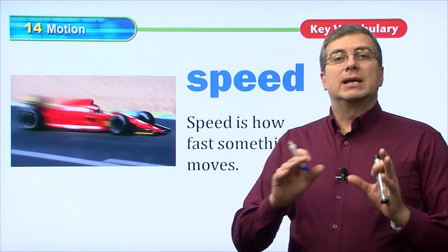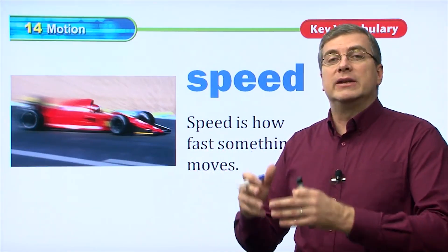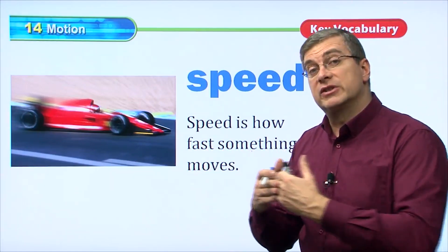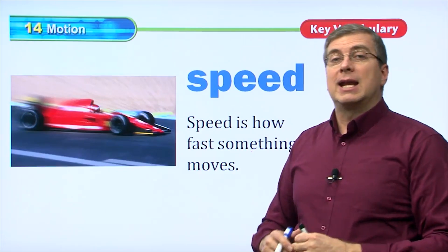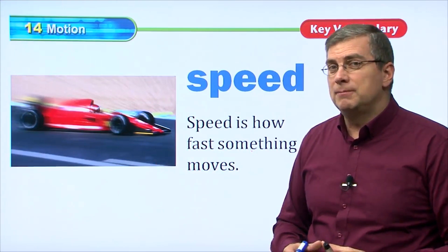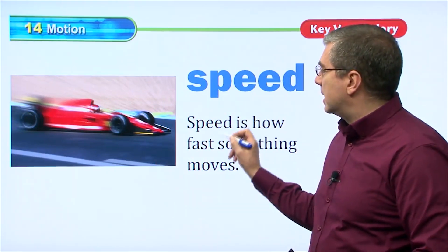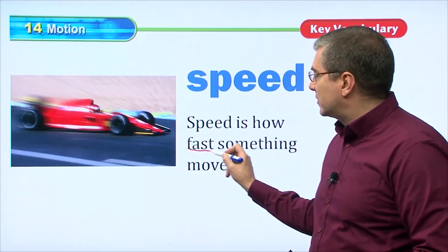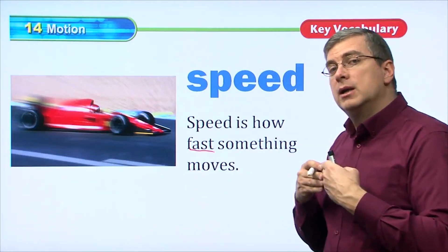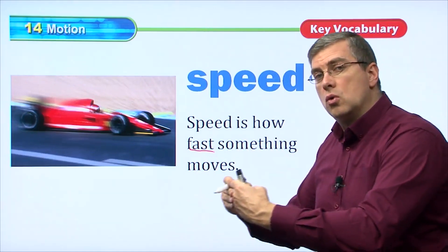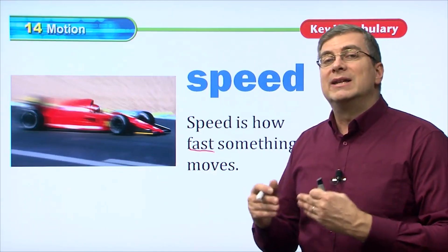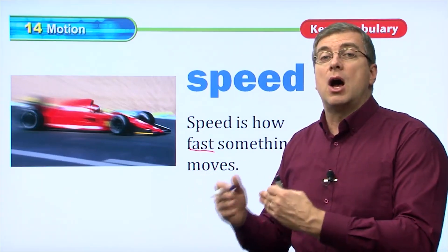When we talk about motion, we can talk about different ways to move. Movement can be fast or it can be slow, and it can have lots of different directions. Right now we're talking about speed. Speed is how fast something moves — something can move fast or it can move slow.